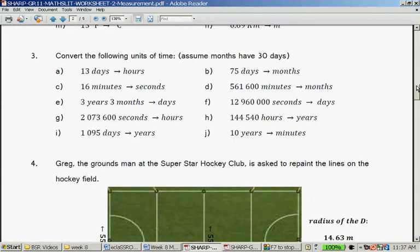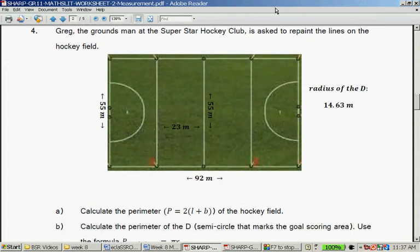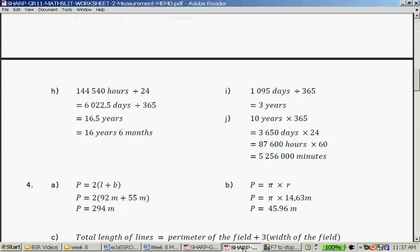Question 4. Greg the groundsman at a superstar hockey club is asked to repaint the lines of the hockey field. Calculate the perimeter. So it's length plus breadth plus length plus breadth. So it's 92 plus 55 plus 92 plus 55. And the perimeter is 294 meters.